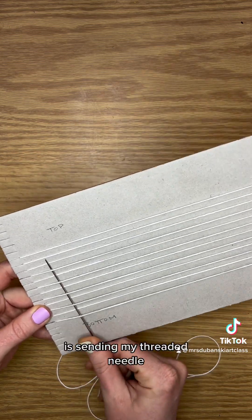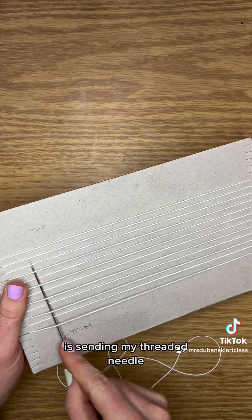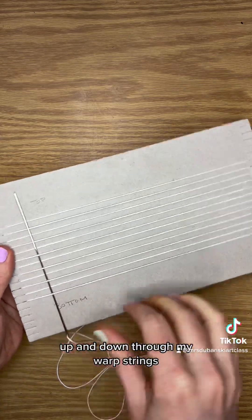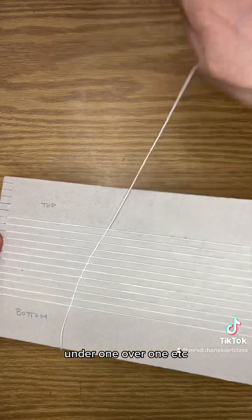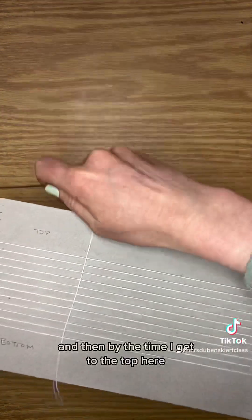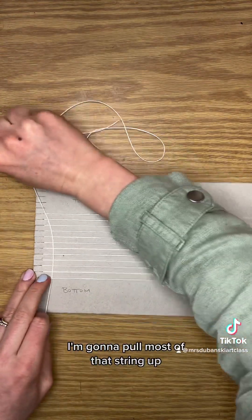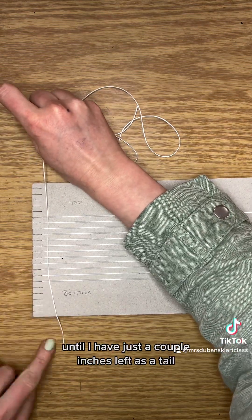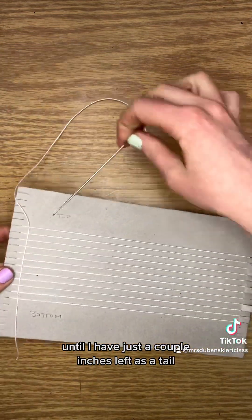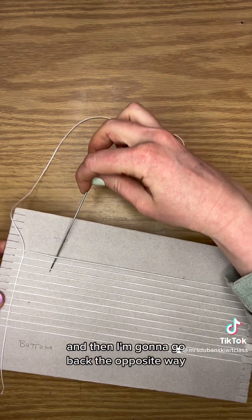What I'm doing here is sending my threaded needle up and down through my warp strings. So under one, over one, under one, over one, etc. And then by the time I get to the top here I'm gonna pull most of that string up until I have just a couple inches left as a tail. And then I'm gonna go back the opposite way.